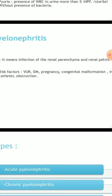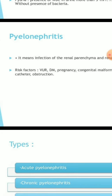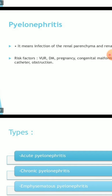Additional risk factors for pyelonephritis include malformation, catheterization, and any instrument being inserted into the body — like catheterization or cystoscopy procedures — which increases the chances of immediate infection. If the patient's immunity is reduced, that also increases the risk of UTI.